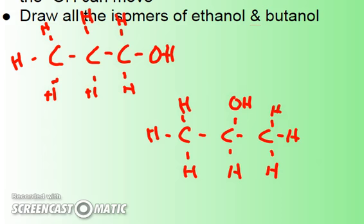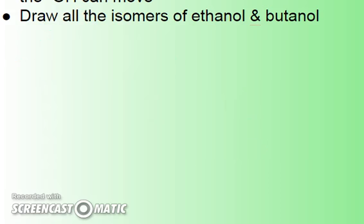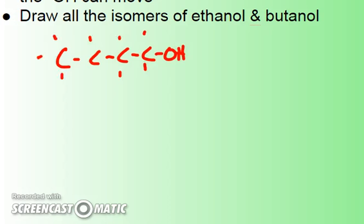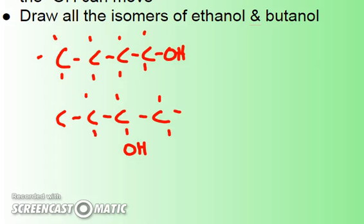With butanol, it gets a little more complex. With butanol I can have four carbons in a row with the OH at the end — I'm just going to put the bonds here without drawing the H's in. Or I could have four in a row with the OH off the second carbon. If I put it off the third one, that's really the same as the second coming from the other end. These would have slightly different condensed structural formulas: CH3, CH2 three times, and then OH.